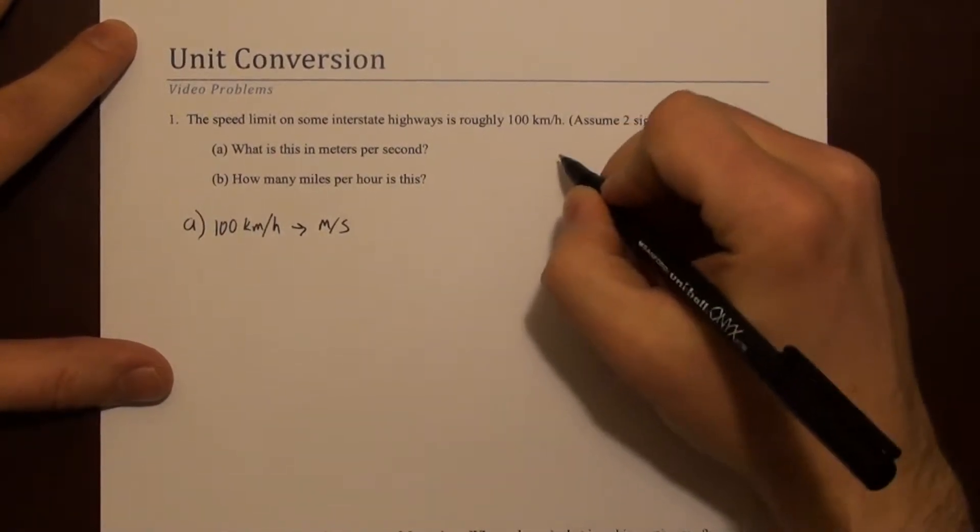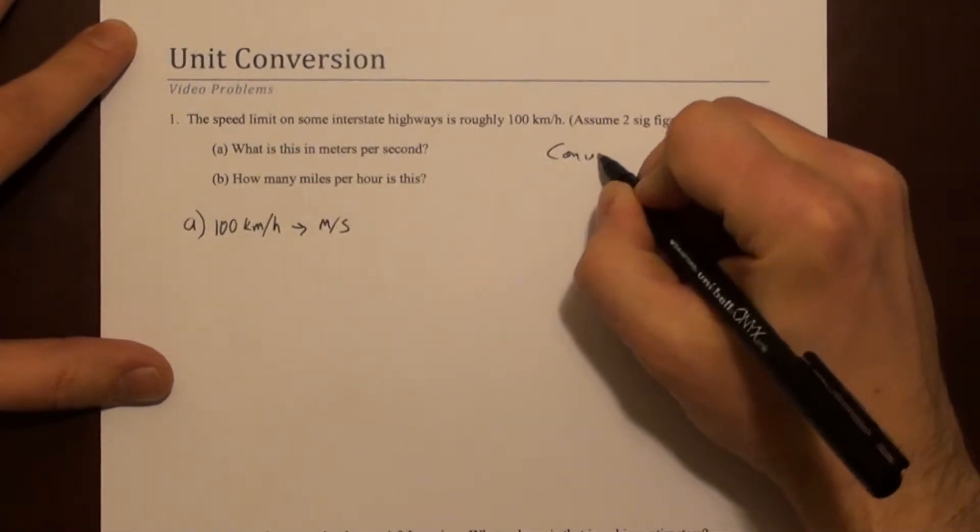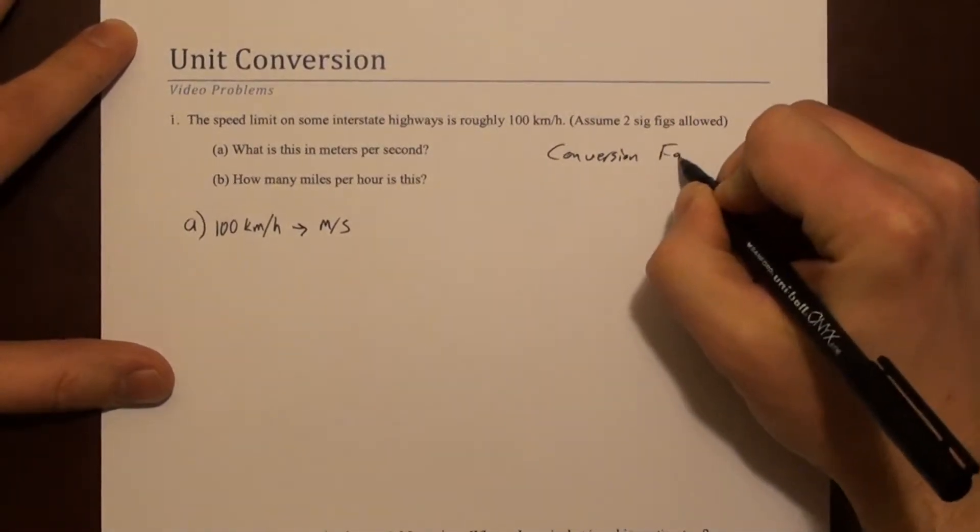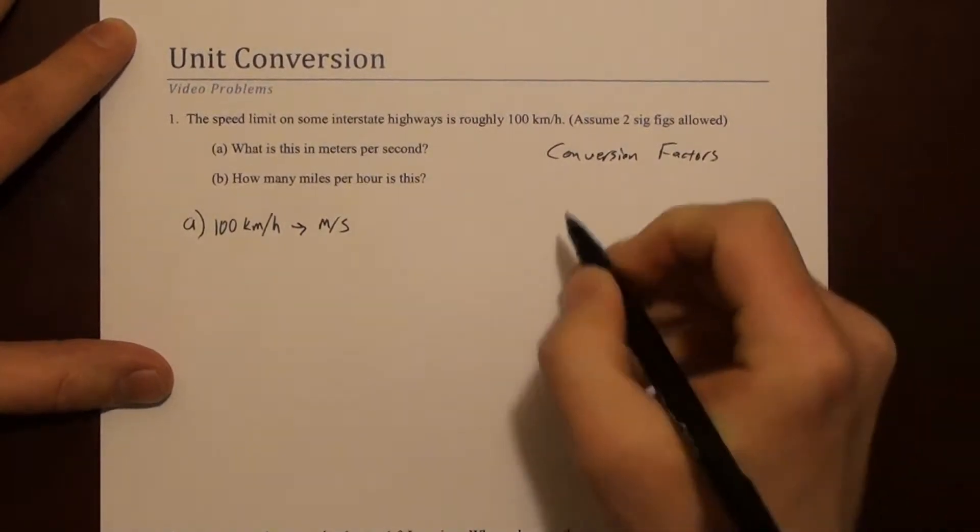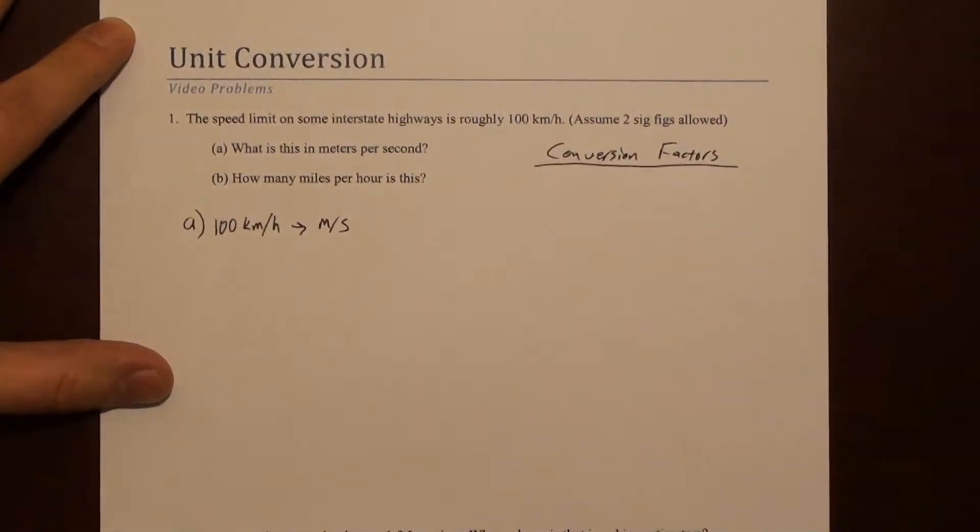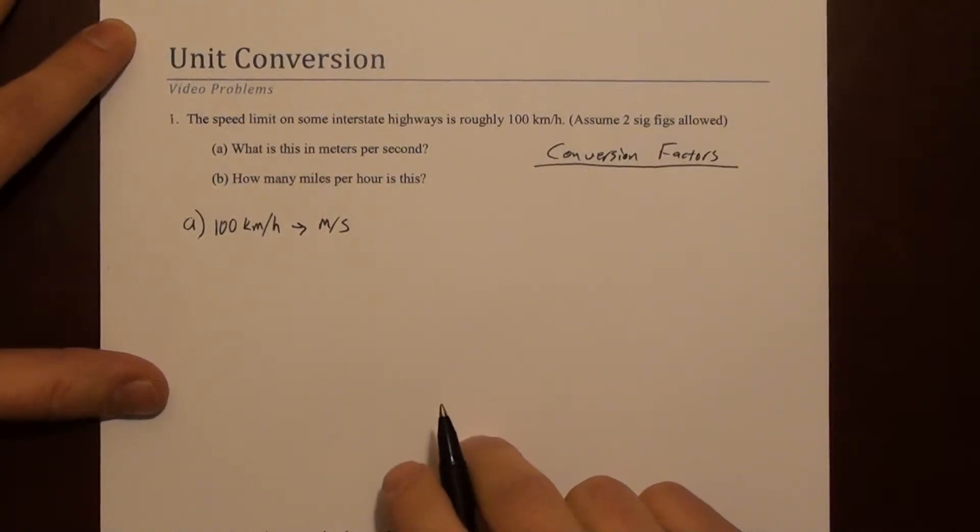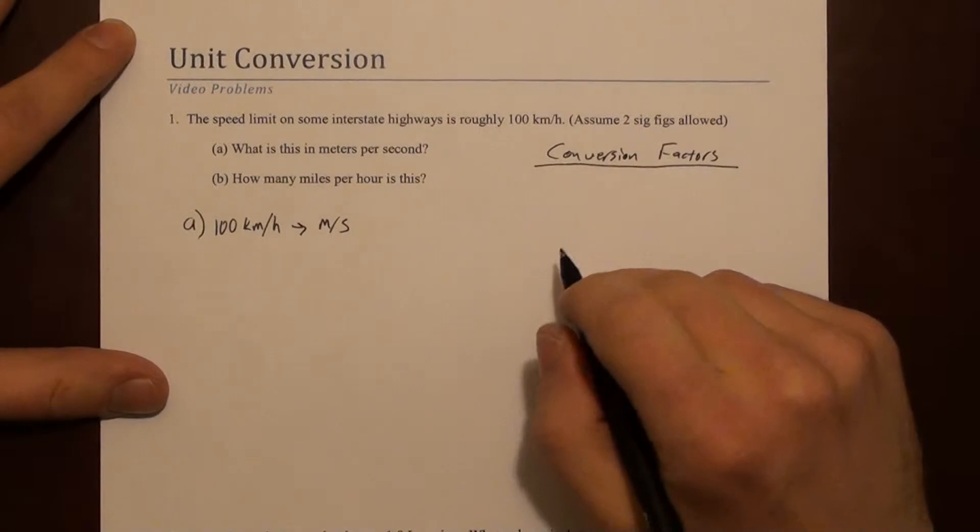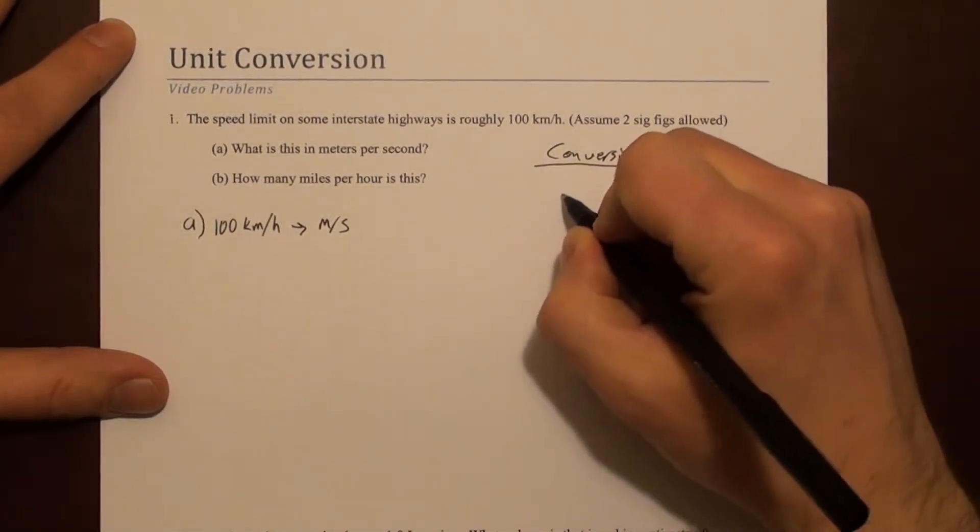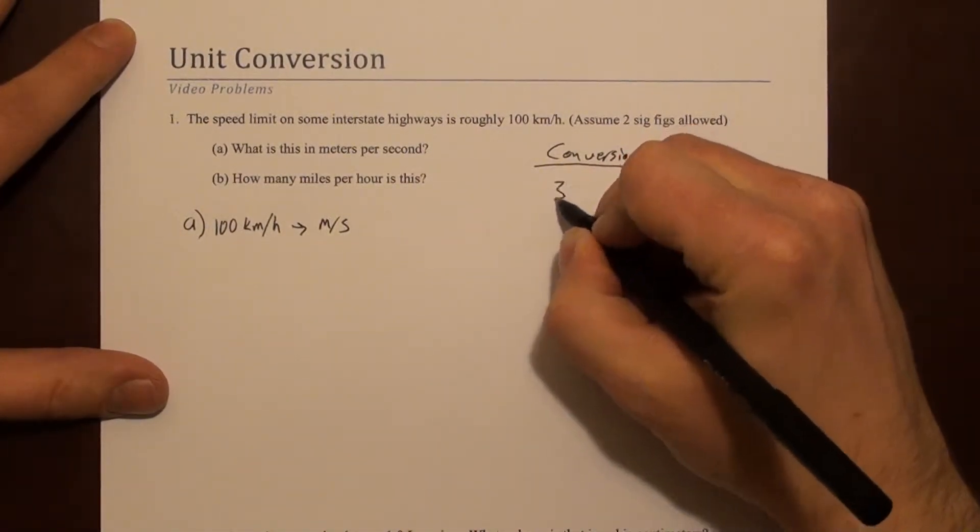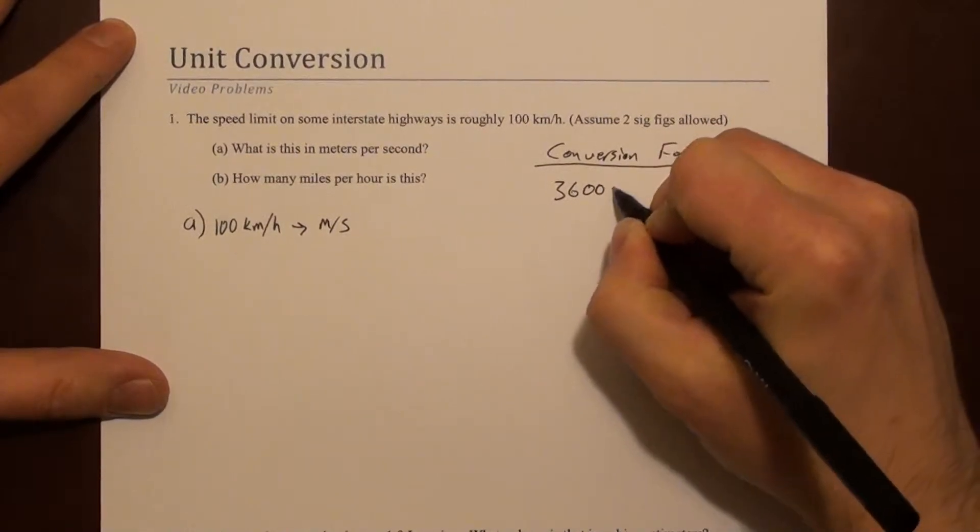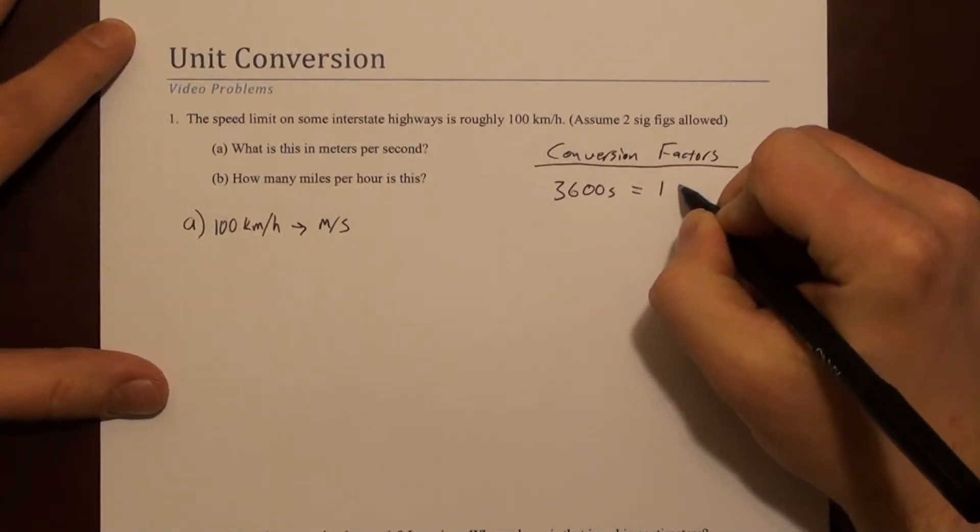I'm going to start a list over here of conversion factors, which are just equalities - how many of one unit is equal to another unit. So maybe I'll start with time. If you think about it a little bit, you can convince yourself that 3600 seconds is one hour.